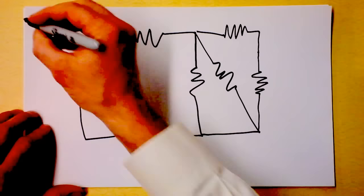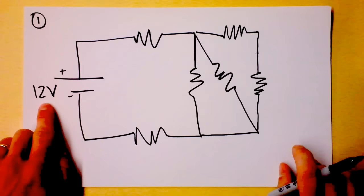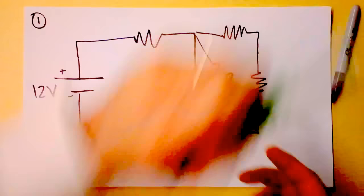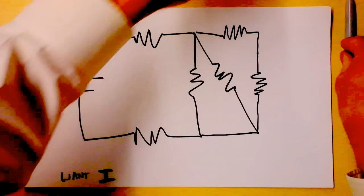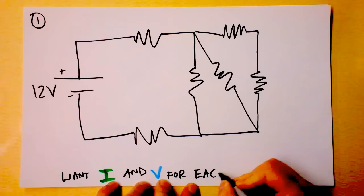We got resistors all over the place. So this is our first picture of this circuit diagram and he starts giving you some numbers. Turns out he's a pretty nice guy. There's a 12 volt battery powering this circuit and he wants to know what current and he wants current through each thing and voltage across each resistor.